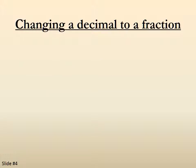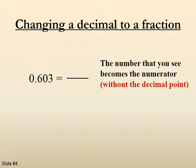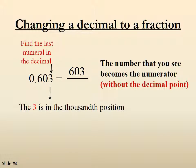Now I'll wait a second while you do this one quickly. So 0.603. We draw a fraction bar. Again, the number that you see becomes the numerator: 603 — no decimal point. We find the last numeral in the decimal, which is the 3. The 3 happens to be in the 1,000th position, so I put 1,000 in the denominator. So 0.603 becomes 603 over 1,000.